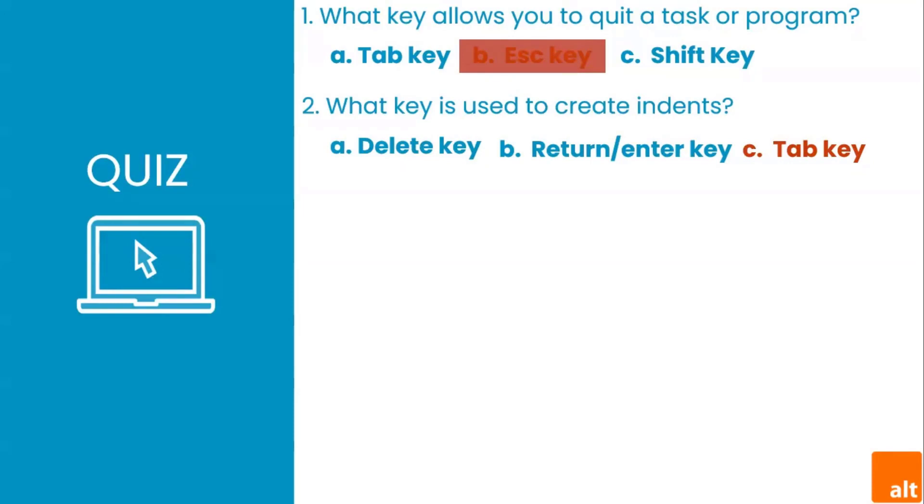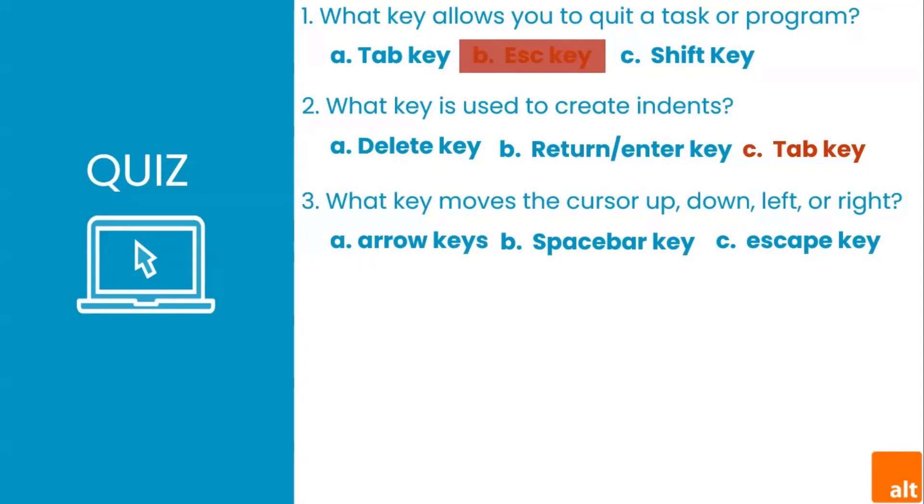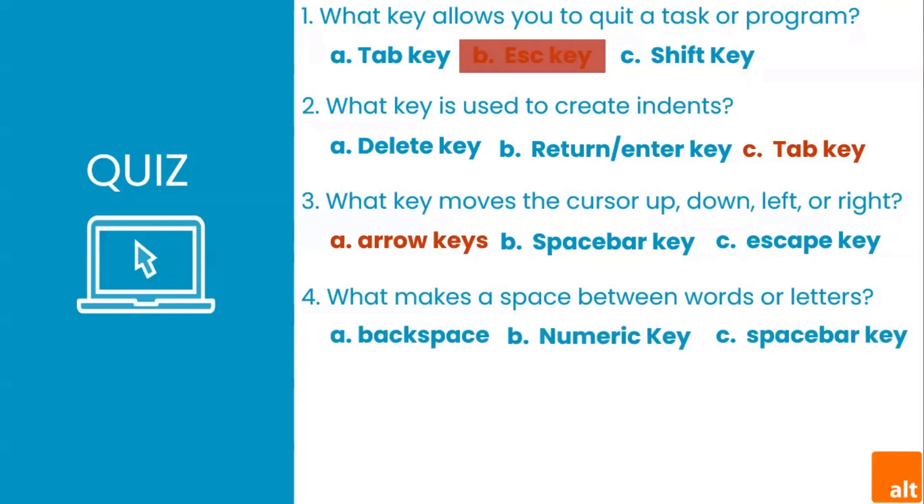What key is used to create indents? Correct! Remember, we mentioned that the Tab key is used to create indents in word processing programs. Also, if you're filling out a form online, you can use the Tab key to switch to the next field. What key moves the cursor up, down, left, or right? You got it right! Remember, the arrow keys are used for many different purposes, including moving the cursor, scrolling documents, and controlling a game. What makes a space between words or letters? Yeah, you guessed right: the spacebar.